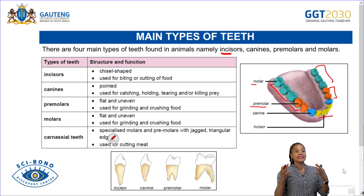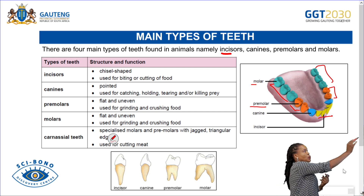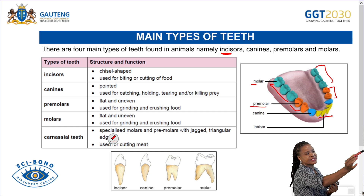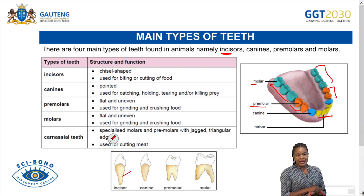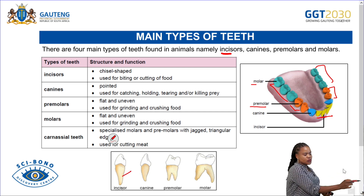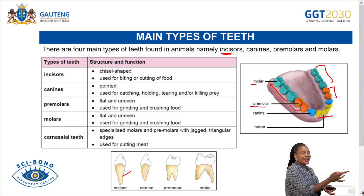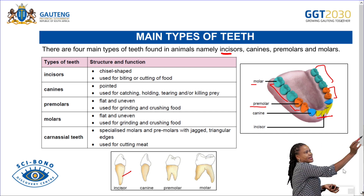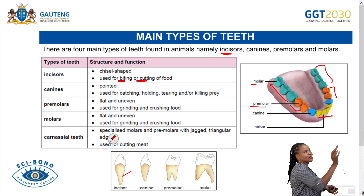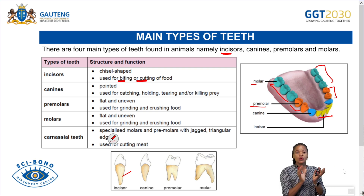Let us look at the structure and function of each tooth. The incisors are chisel-shaped — you can see the chisel shape in this example. The function of the incisors is to cut and bite food.